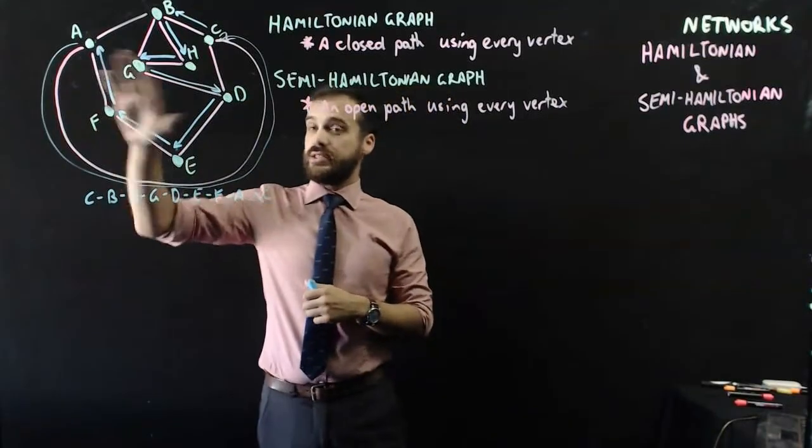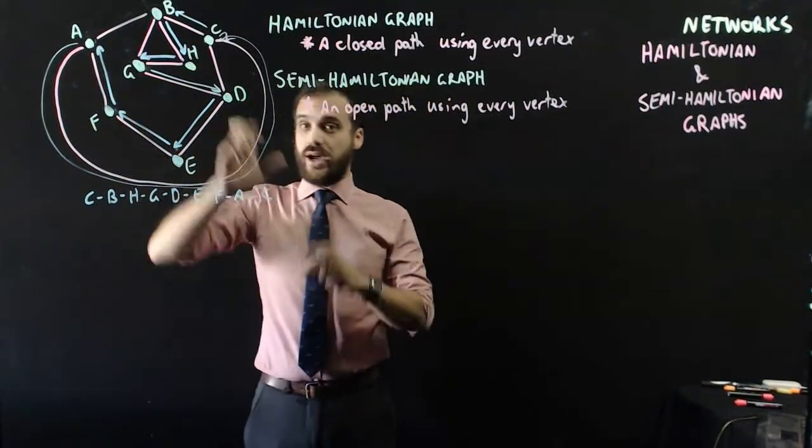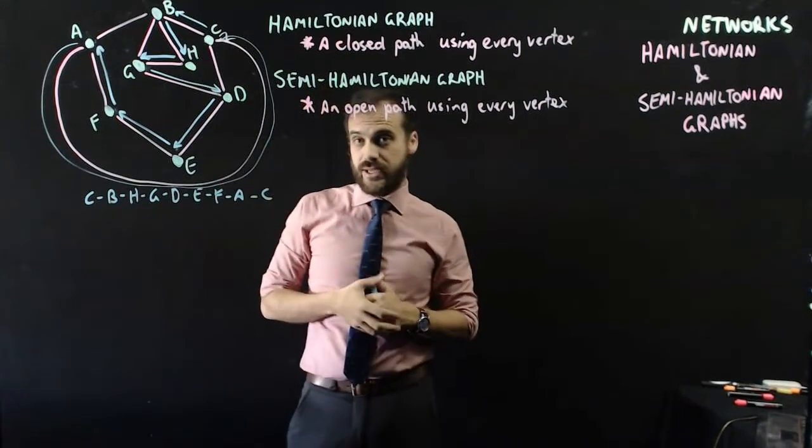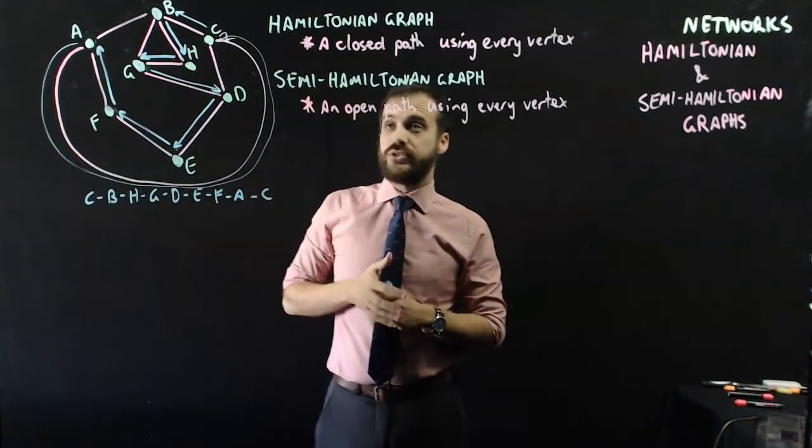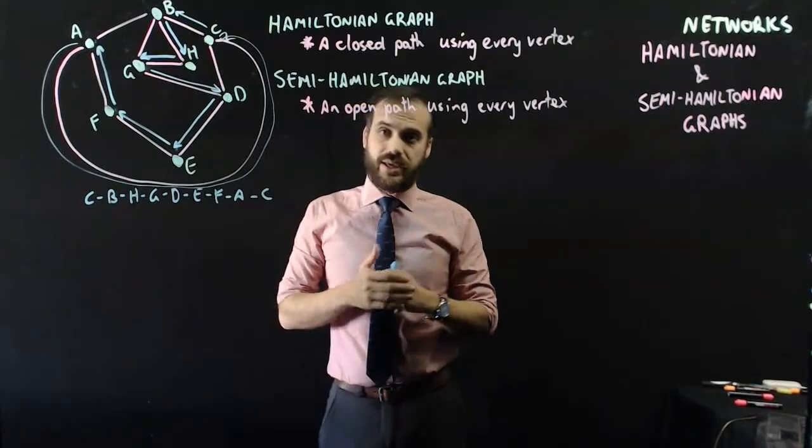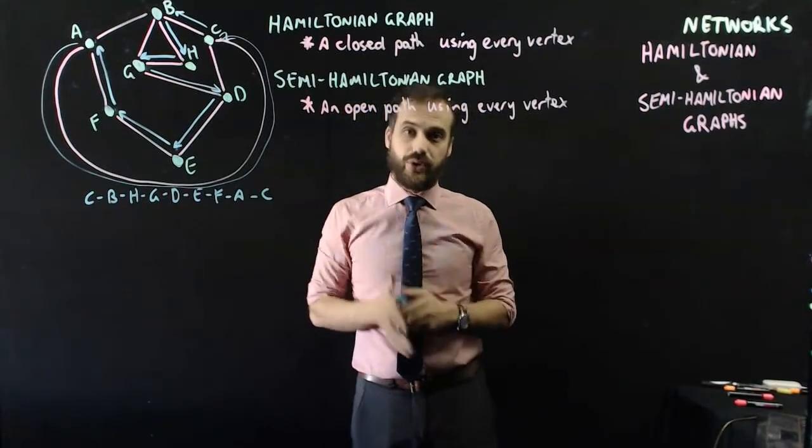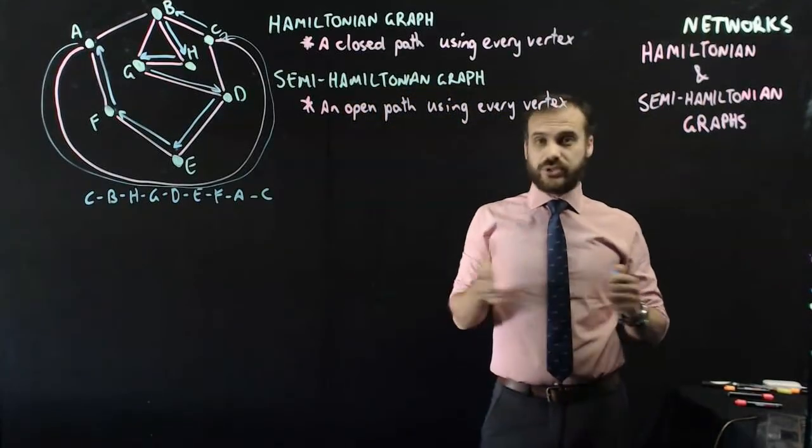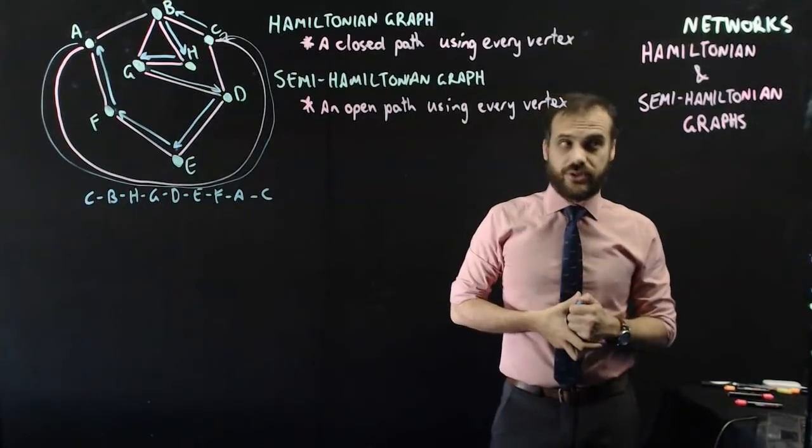Now, again, I don't know if it's a Hamiltonian graph without that. I haven't tested every single vertex, but that's what you would have to do to determine whether something is Hamiltonian or not. That's it. Hamiltonian and semi-Hamiltonian graphs.